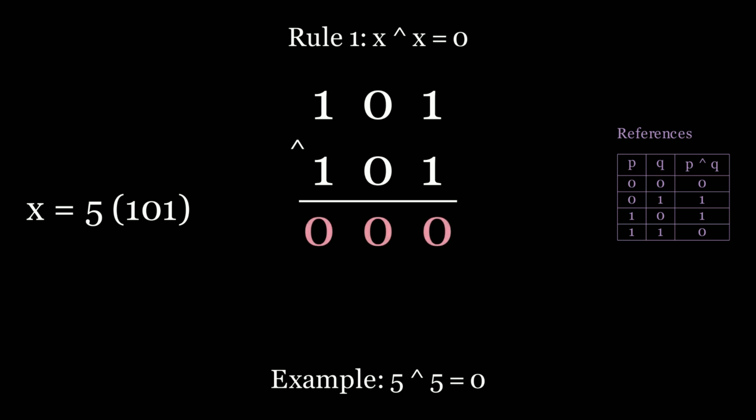We actually get 0. It's because the exclusive OR if you're XORing the same bit you always get 0. So if we XOR the same exact number every bit is the same and we're resulted with 0. So this is rule number 1.